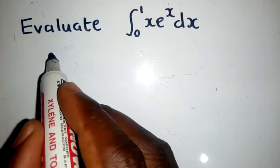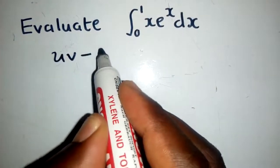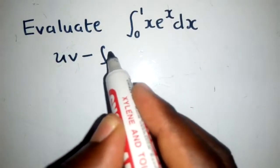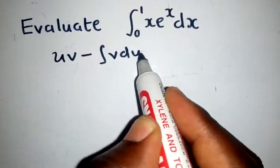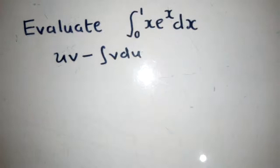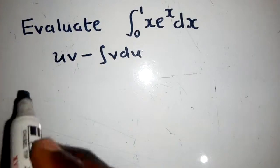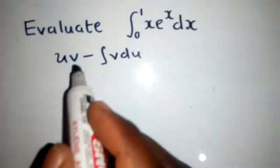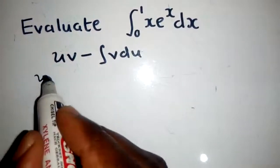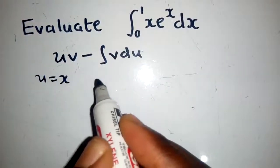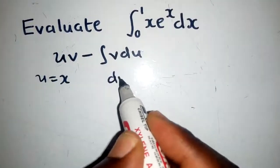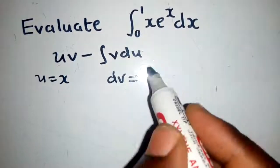The by parts method looks like this - this is the formula for the by parts method. So you pick which one is your u. X will be our u, and then you also pick dv.